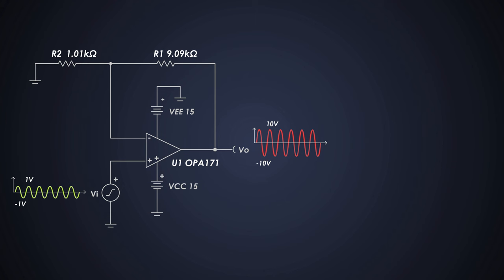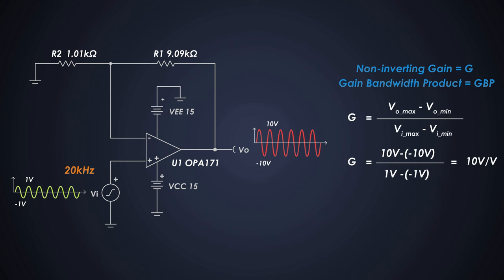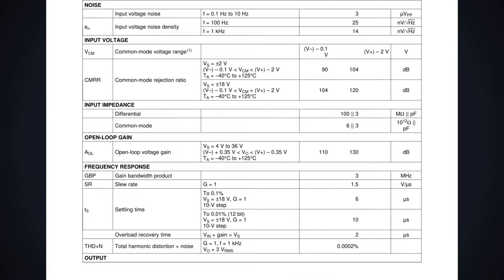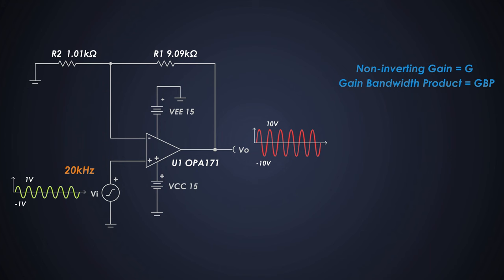Now let's find out if our amplifier can handle that 20 Kilohertz signal or not. We consider the non-inverting gain and the gain bandwidth product of the op-amp for this calculation. We already know what is the non-inverting gain and gain bandwidth product is mentioned in the op-amp datasheet. From these parameters, we can calculate the bandwidth of the op-amp for this application, which is 300 Kilohertz. So it has sufficiently large bandwidth which can handle 20 Kilohertz signals.